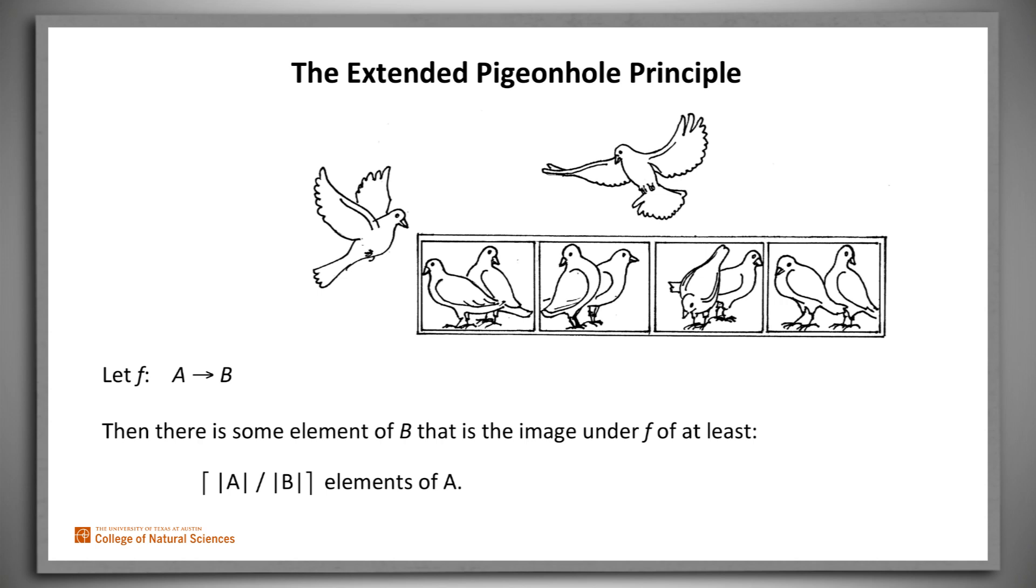But even if we do that, there'll be at least one element of B that contains at least the number of elements of A divided by the number of elements of B. Take the ceiling of that element. To see why this has to be, observe that the number of elements of A divided by the number of elements of B is the average number of students per chair.